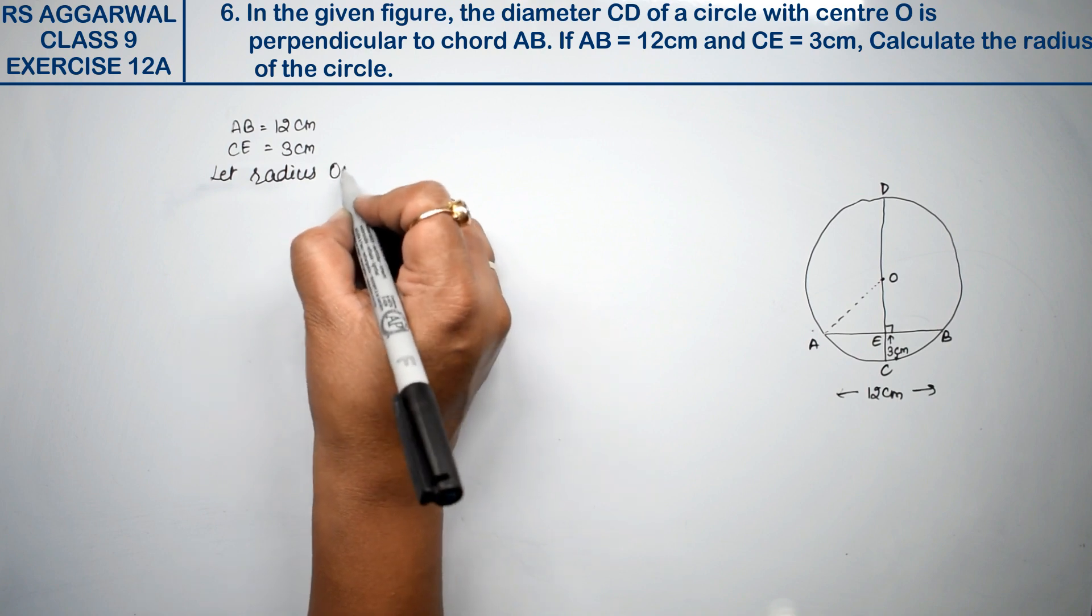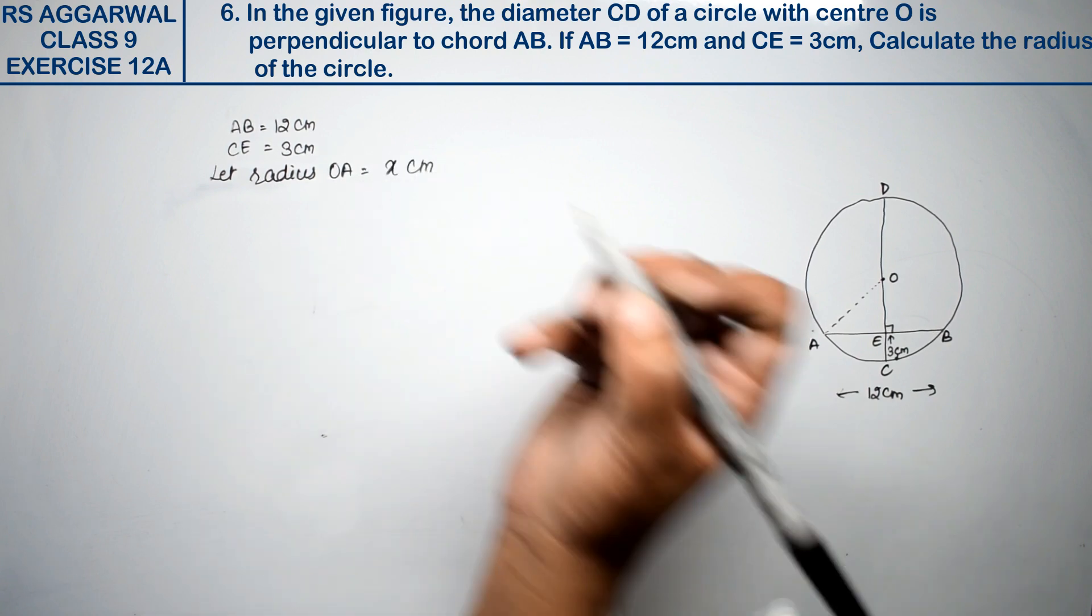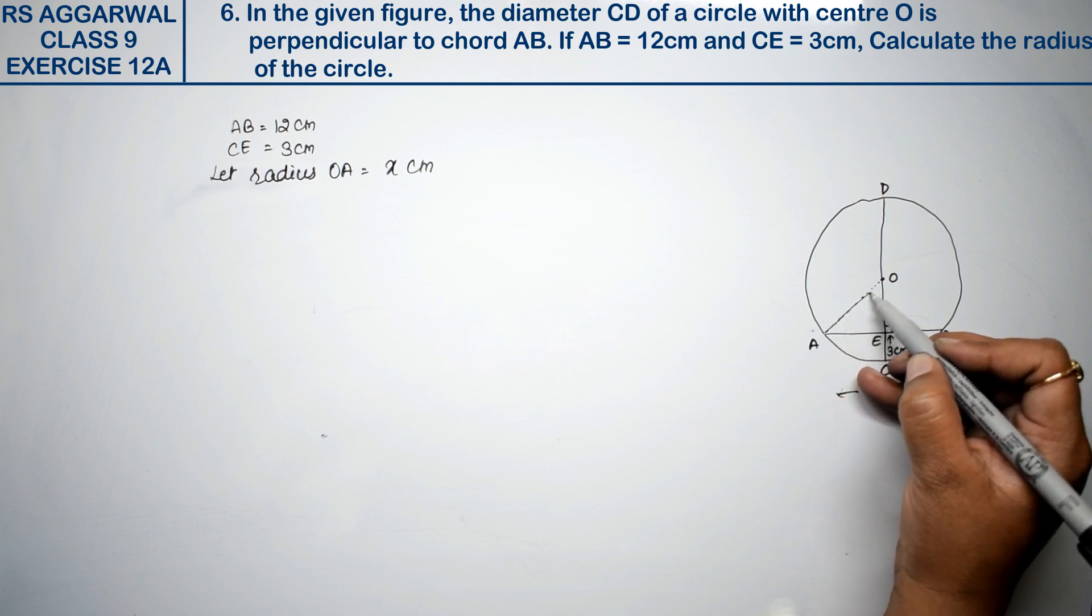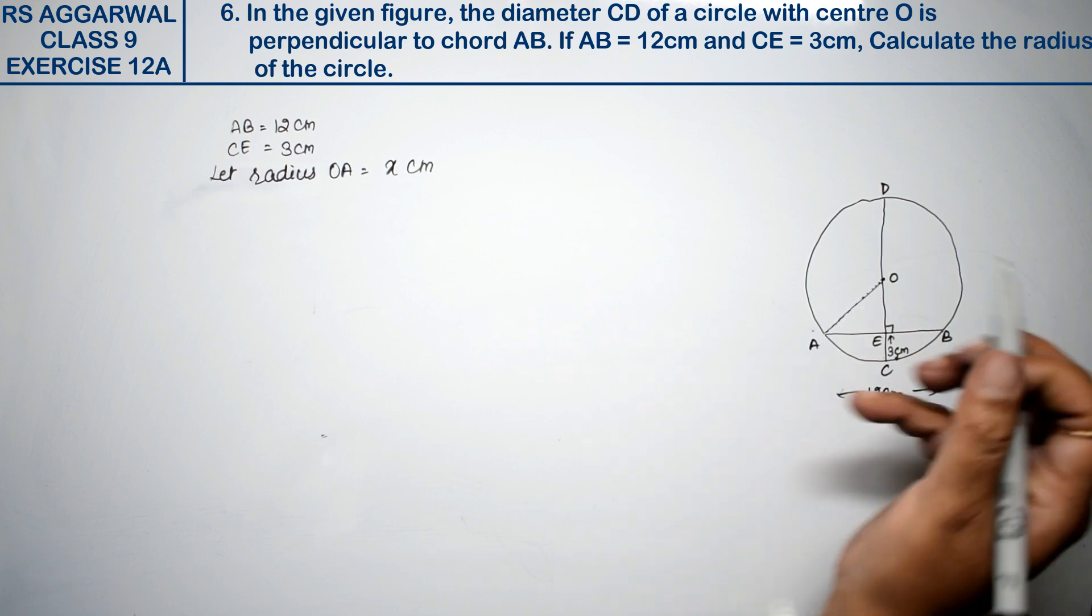Radius OA equals to x cm, right friends? Now, I will say radius OA, OC, or OD, everything will be x cm, right friends?